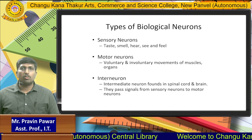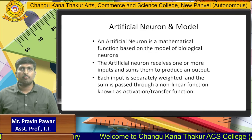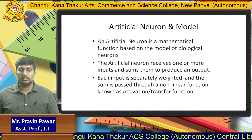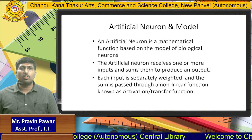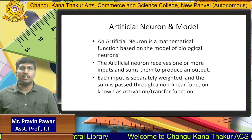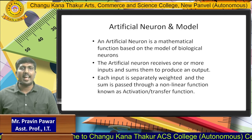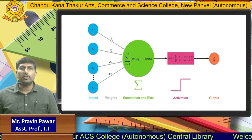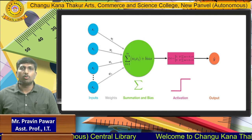The types of biological neurons are sensory neurons, motor neurons, and interneurons. An artificial neuron is a mathematical function based on the model of biological neurons. The artificial neuron receives one or more inputs and sums them to produce an output. Each input is separately weighted and the sum is passed through a non-linear function known as the activation function, which is used in algorithms to find output through the neural network.